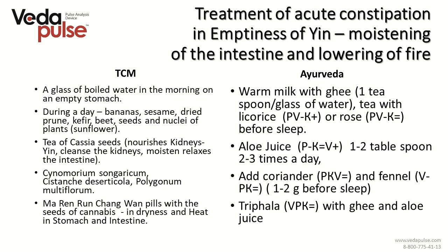Now let's turn to methods of treatment of constipation in emptiness of yin. We discussed two main goals: moistening of the intestines and lowering of fire. According to TCM, one of the main rules is to drink a glass of boiled water in the morning on an empty stomach to moisten the intestinal mucosa. According to Ayurveda, it would be even better to drink a glass of warm milk with ghee to treat dryness with oil. Drinking tea with licorice during the day is also beneficial. TCM recommends tea of seeds of Senna. In Ayurveda, aloe juice is more preferable — it is really helpful in lowering fire. In cases with accompanying excess of Vata Dosha, adding fennel to aloe juice would soothe Vata.